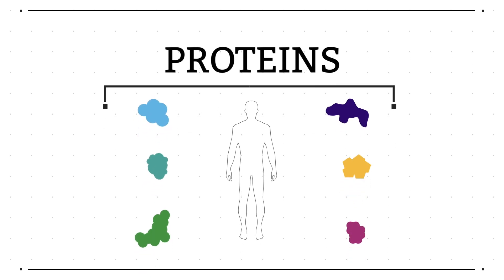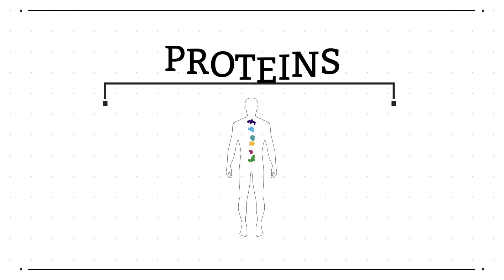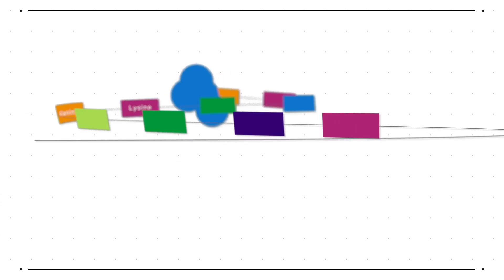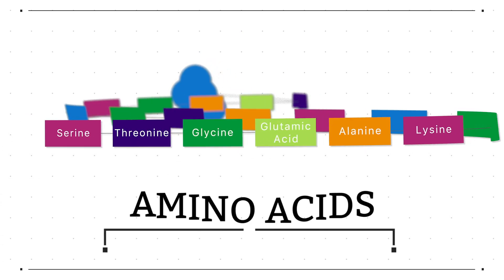Proteins are essential for life and are involved in nearly all the processes in our bodies, but how are they made? Proteins are complex molecules made up of smaller subunits called amino acids.